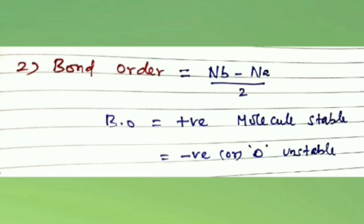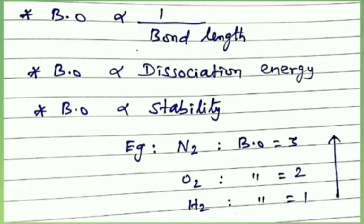If bond order is positive, the molecule is stable. If bond order is negative or zero, the molecule is unstable and does not exist. Bond order is inversely proportional to bond length and directly proportional to the stability and dissociation energy. For example, nitrogen and oxygen molecules are shown here.